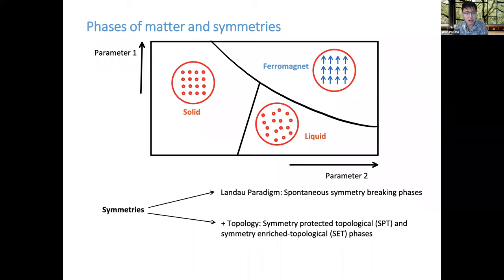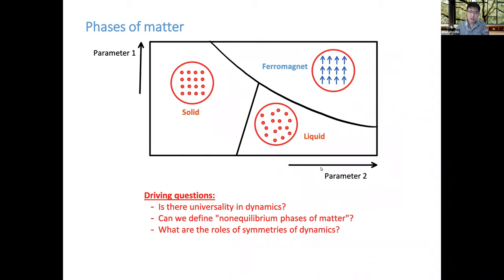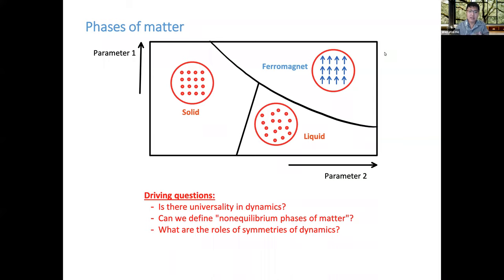In this talk, I want to ask: is there a notion of phases of matter out of equilibrium? The phase diagram I've drawn is usually discussed when phases are at equilibrium — when the system has settled down to a thermal state, or for topological order, in the ground state with a gap. Those are equilibrium properties. Now I want to ask: is there something also happening in dynamics? How can we sharply define phases of matter which are out of equilibrium, characterize them, and what roles do symmetries play in giving rise to these new phases?